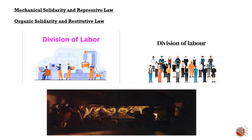In Durkheim's analysis, mechanical solidarity corresponds to societies characterized by what he termed repressive law, while organic solidarity is associated with restitutive law. Mechanical solidarity describes social cohesion in traditional pre-industrial societies, where individuals share similar values, norms, and beliefs. In these societies, social order is maintained through repressive law, which relies on punitive measures to uphold collective morality and punish deviant behaviors. For example, in tightly knit agricultural communities where everyone follows the same customs and traditions, any deviation from societal norms is met with harsh punishment.